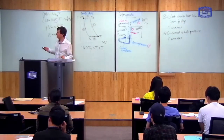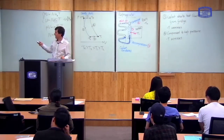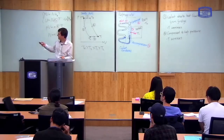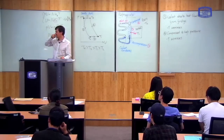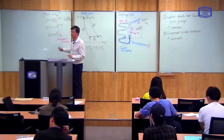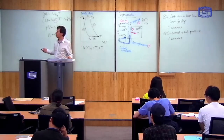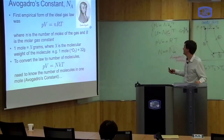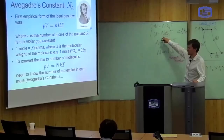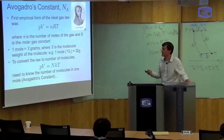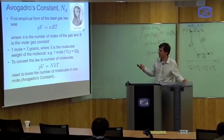Avogadro's constant is named after Amedeo Avogadro. He did not actually measure it. It's named after him because he was the first person to use the idea that the ideal gas law looked like this to suggest that we could write a mole in terms of a constant number of particles. So he came up with the idea of this constant, but he didn't actually measure it — that was done later on.